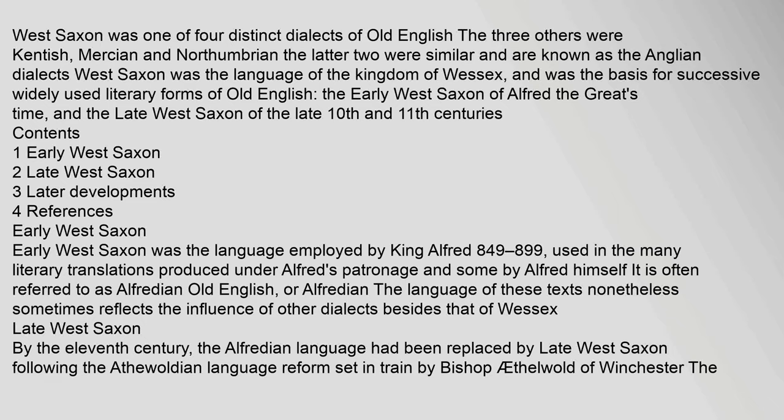Early West Saxon was the language employed by King Alfred (849–899), used in the many literary translations produced under Alfred's patronage and some by Alfred himself. It is often referred to as Alfredian Old English, or Alfredian. The language of these texts nonetheless sometimes reflects the influence of other dialects besides that of Wessex.